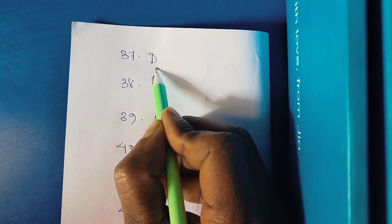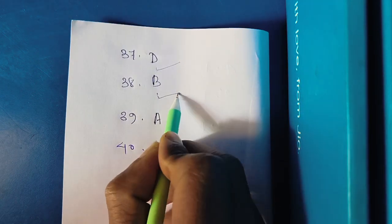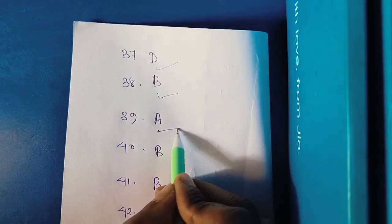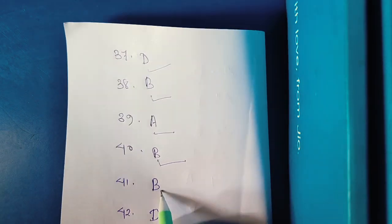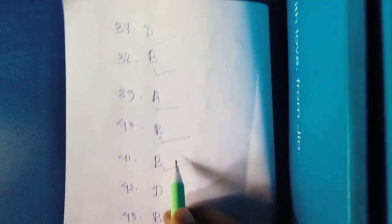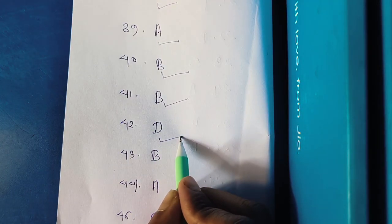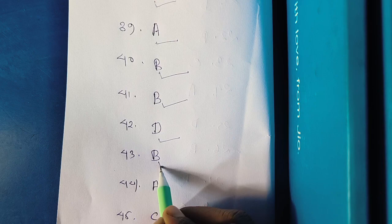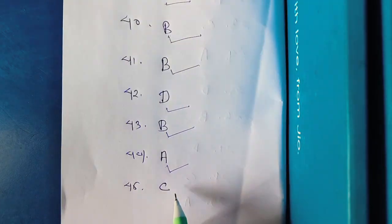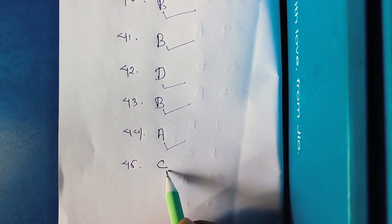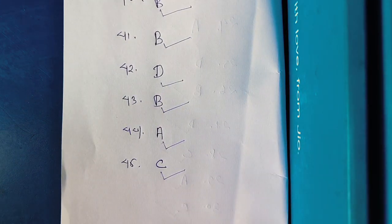37 answer option number D. 38 right answer option number B. 39 answer option number A. 40 answer option number B. 41 right answer option number B. 42 right answer option number D. 43 answer option number B. 44 answer option number A. 45 answer option number C. I still don't have the full answer — I'm not secure on the solution.